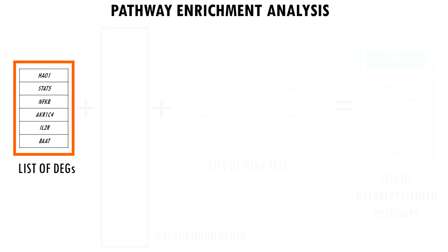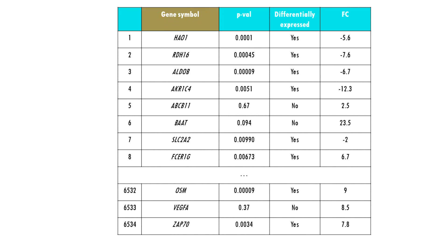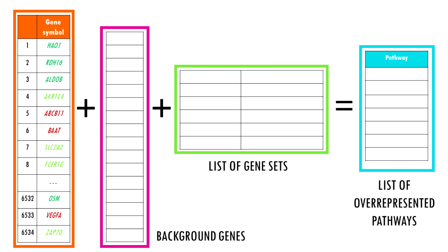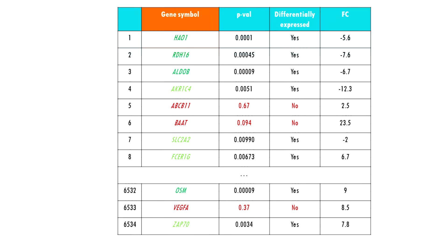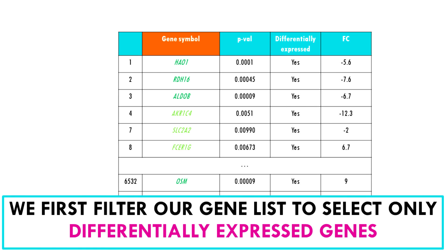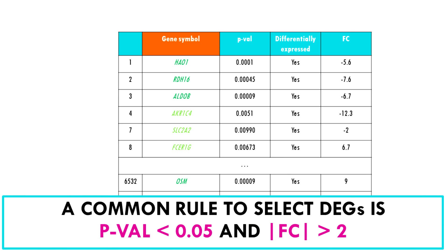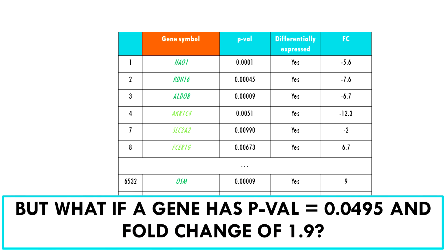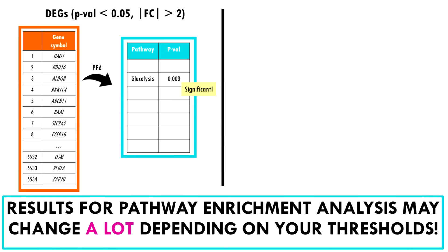Finally, regarding your gene list: results from gene expression analysis include genes that are downregulated, upregulated, and unchanged, with some changes significant and some not. If you use this full list for pathway enrichment analysis it will not take into account all that information and will also match genes that are not even differentially expressed. So you need to first filter your results by significance and fold change to keep only differentially expressed genes. The results can change a lot depending on the cutoffs you set.